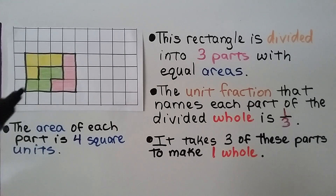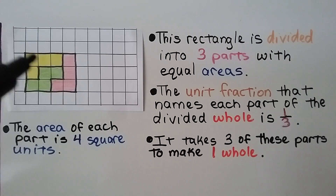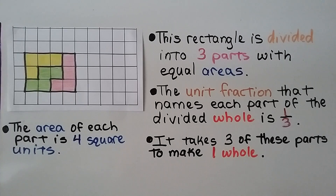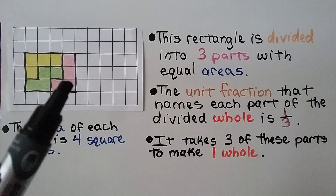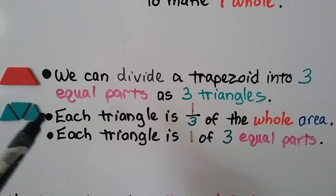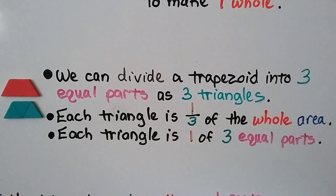This rectangle is divided into three parts with equal areas. The unit fraction that names each part is one-third. We have yellow, green, and red — three equal areas. The area of each part is four square units: four yellow, four green, four red. It takes three of these parts to make one whole, so each color is one-third of the rectangle. Similarly, a trapezoid can be divided into three triangles of equal area. If we put those triangles together, they equal the trapezoid. Each triangle is one-third of the whole area, or one of three equal parts.